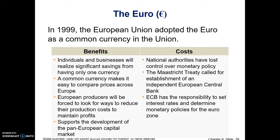The optimal currency area is a geographical region in which it would maximize economic efficiencies to have the entire zone sharing a single currency. However, if the area is too large or too diverse — such as Europe, or even the United States and Canada — one common monetary policy would not be what each diverse area within it needs. It would be better to have more internal exchange rates.